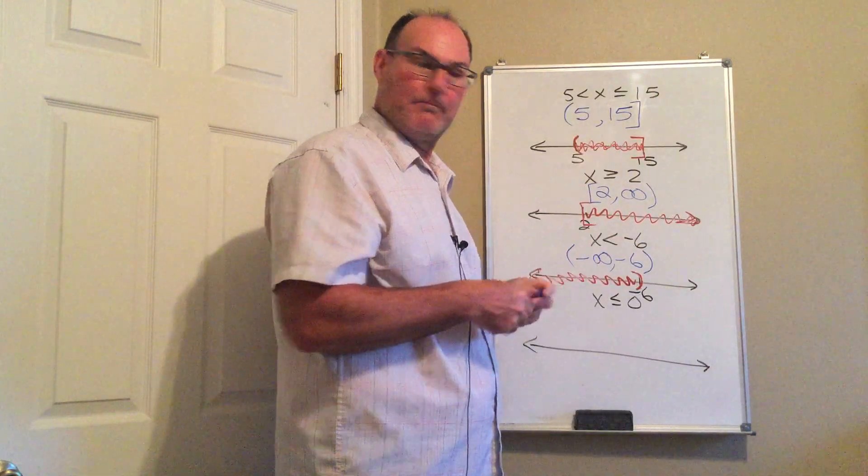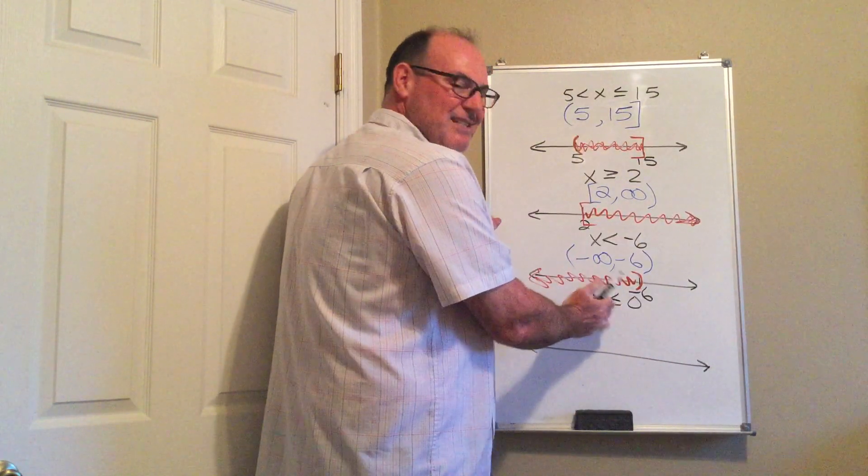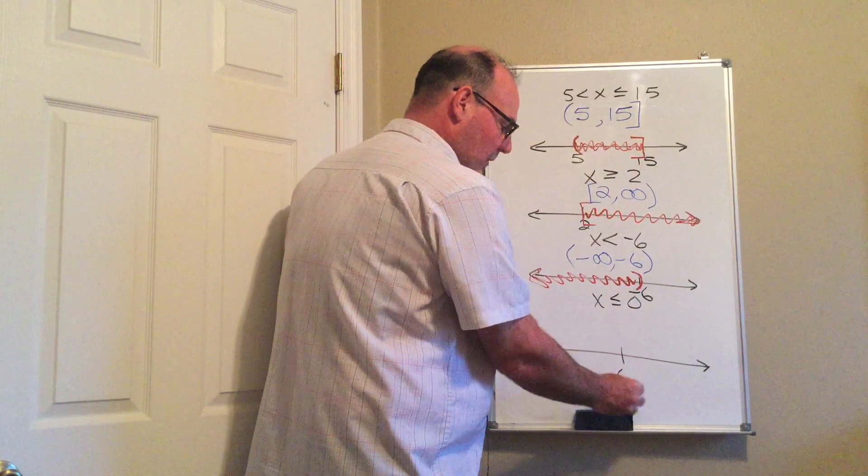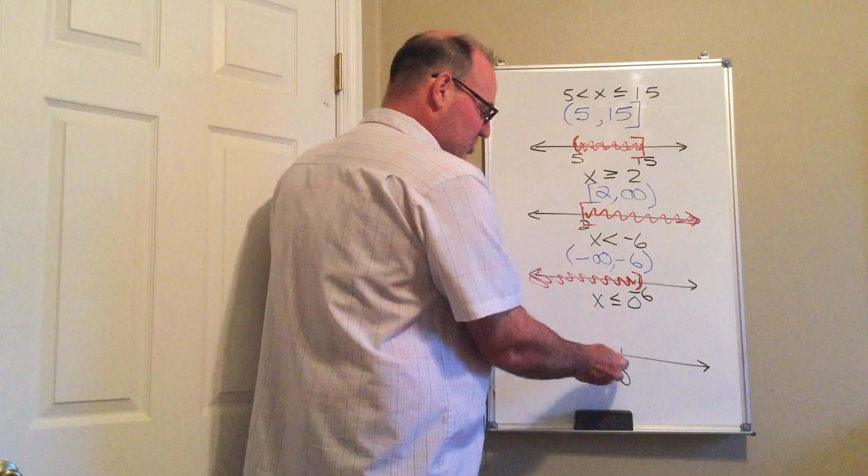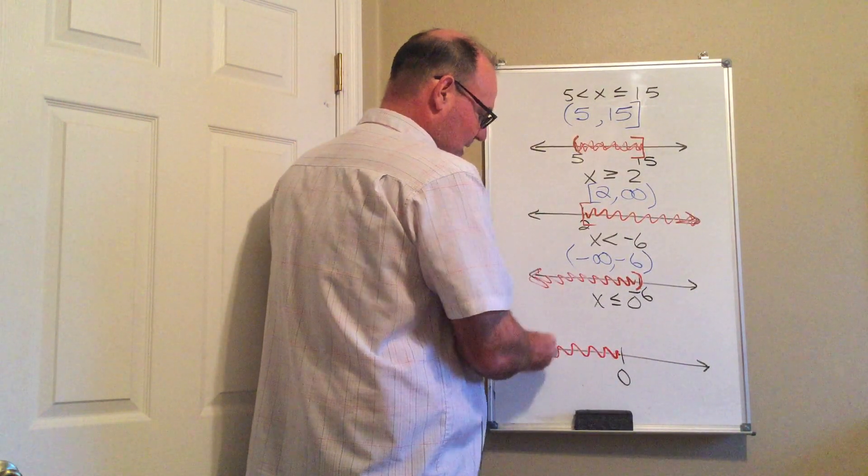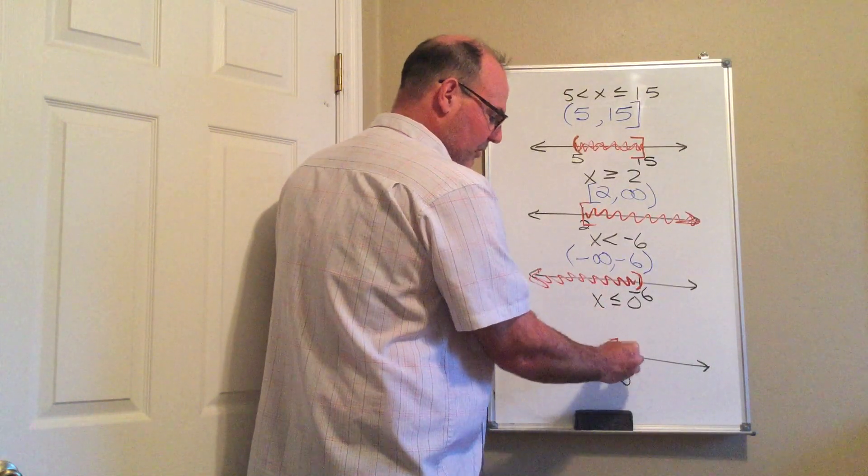One more example, just for fun. All the values less than or equal to 0. I'm going to put 0 right here. That's my boundary. If I'm graphing this, I shade to the left. There is an equal, so I'm going to put a bracket.